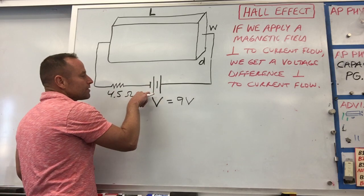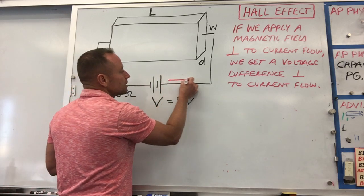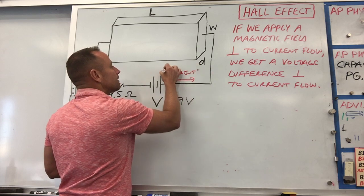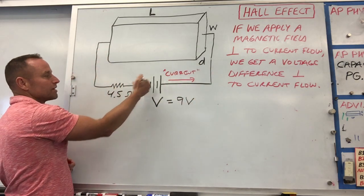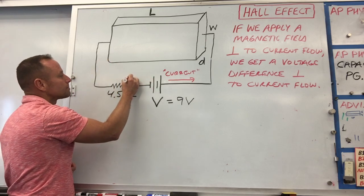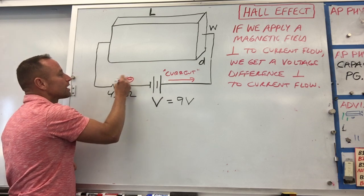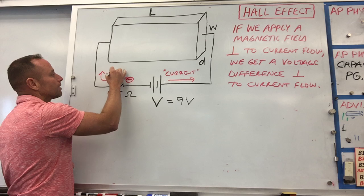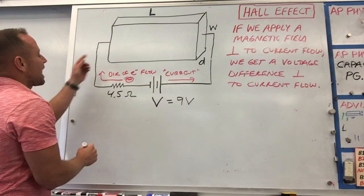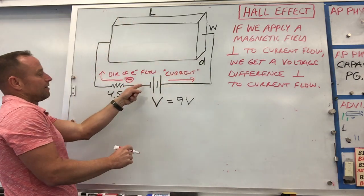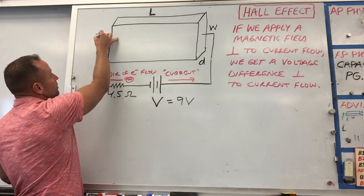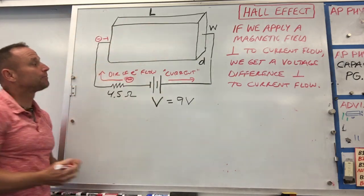If you have this battery, what we call conventional current flows this way. But of course, the direction of electron flow is the opposite direction — that's the negatively charged electron. So you effectively have negative charges coming into the block of copper and going this way.